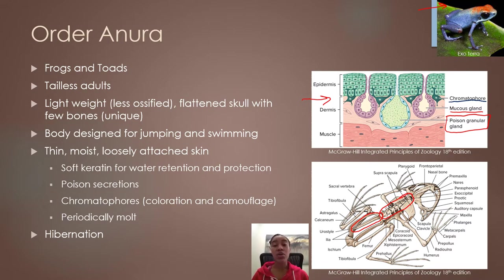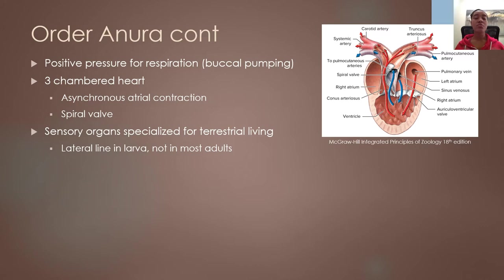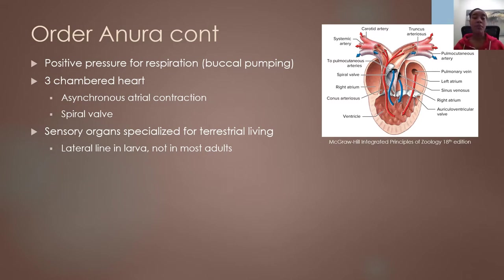Frogs and toads undergo hibernation in winter, often burying themselves underground, underneath logs, within trees, or staying submerged underwater. They can survive even if the water freezes over — some frogs and toads can survive even if 30% of the water inside their body freezes. They come out of hibernation in spring and warmer months to feed and spawn. Frogs and toads use positive pressure — buccal pumping — to bring air into their lungs: air is brought into the mouth and then pushed into the lungs, and exhaled air moves back through the mouth. This is a very different mechanism from what we see in birds and mammals.